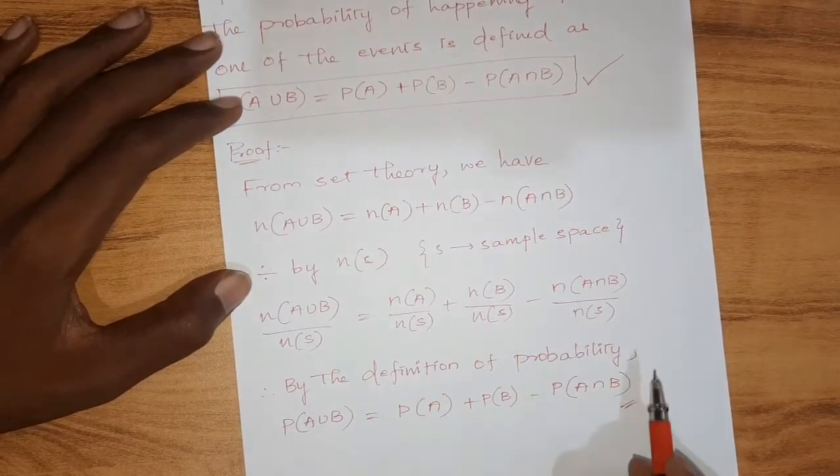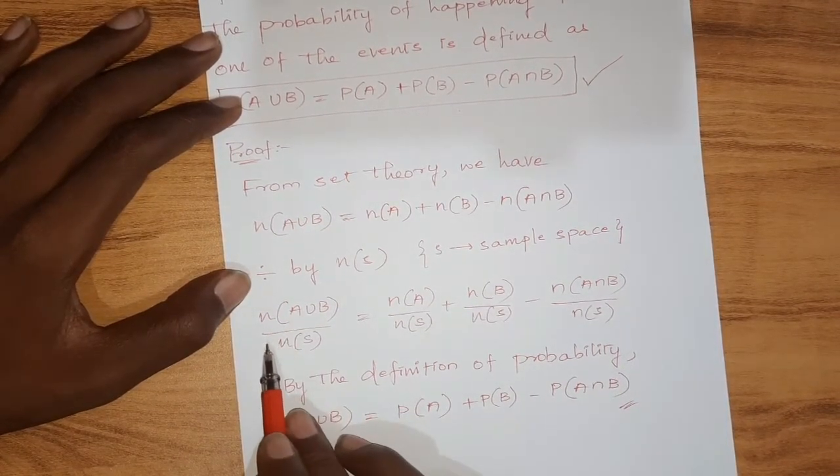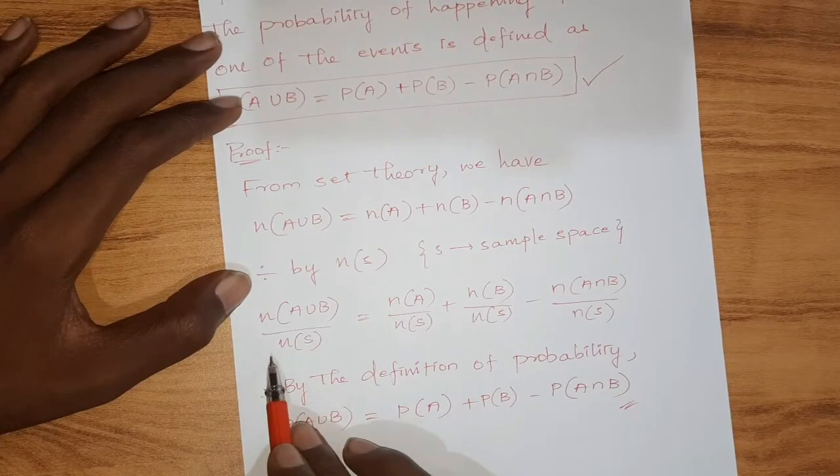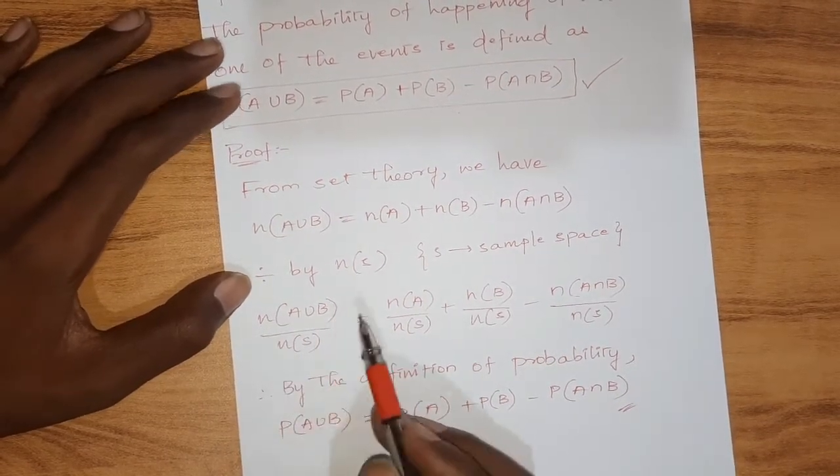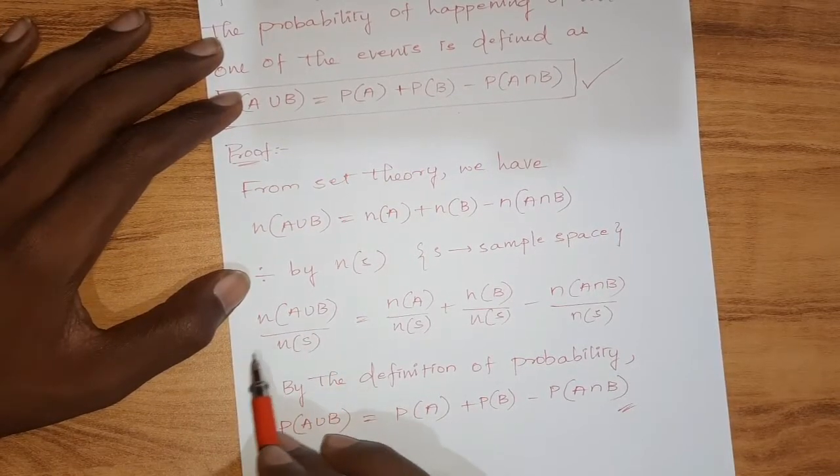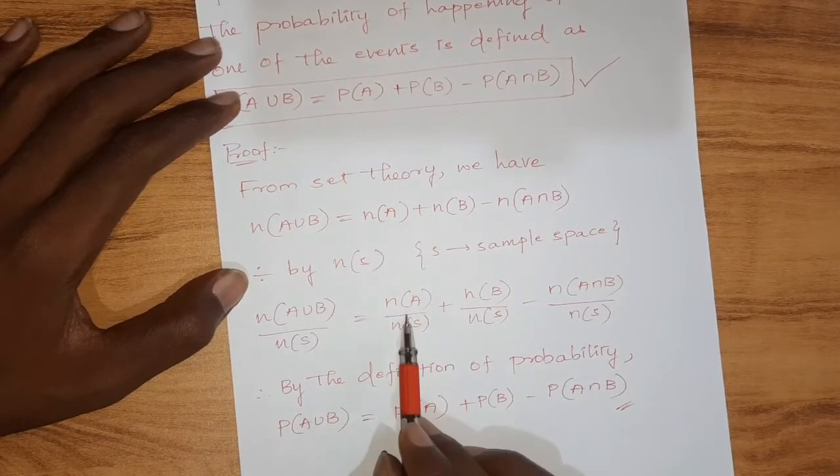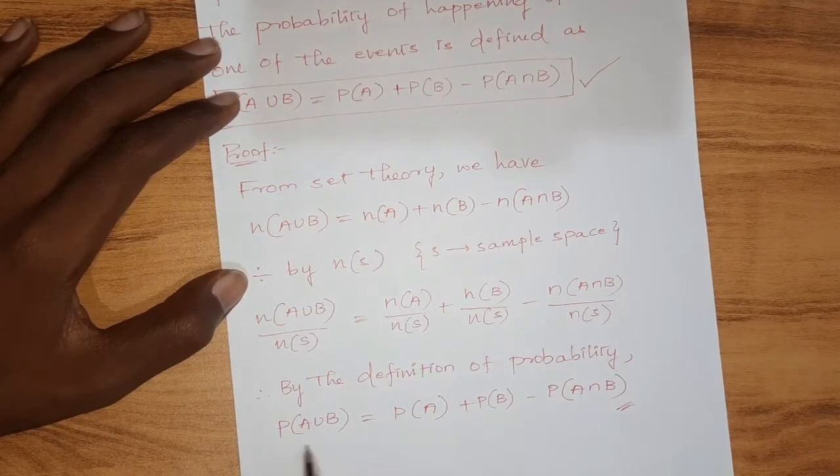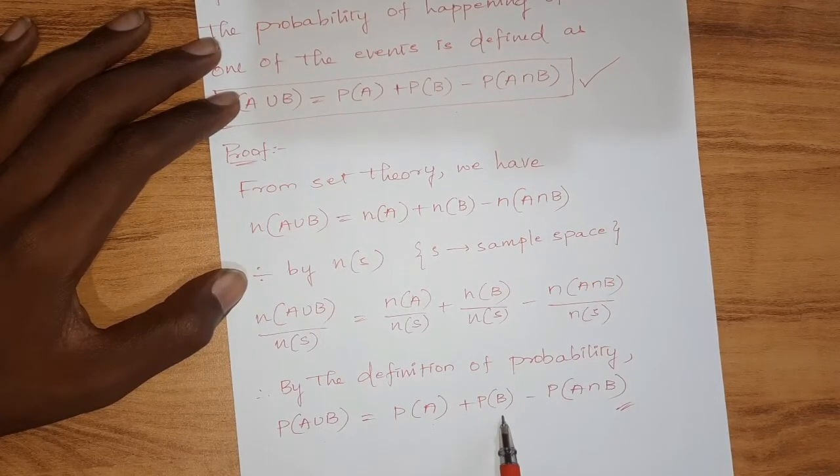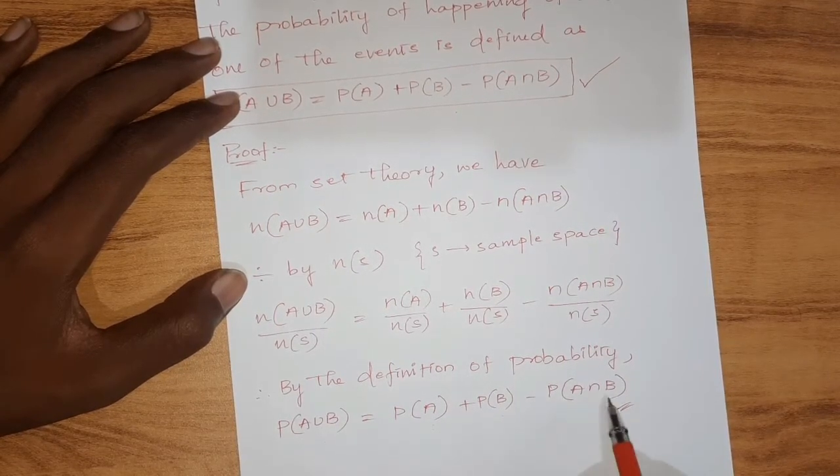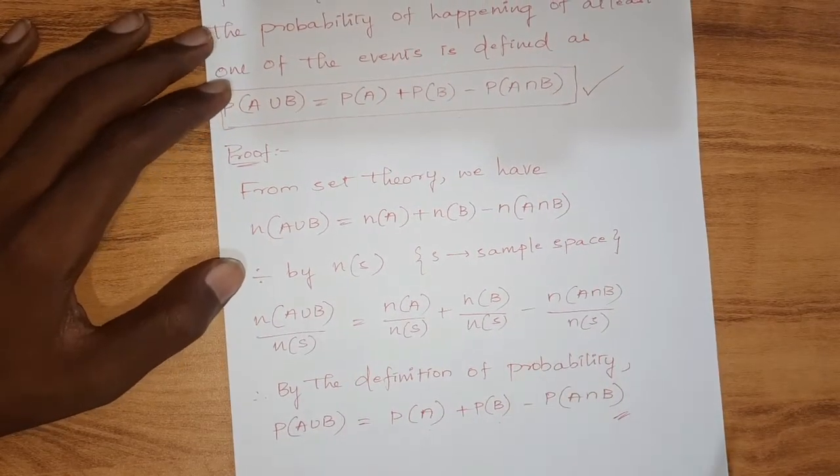By the definition of probability, N of S basically indicates total number of outcomes in a sample space. So N of A union B by N of S equals P of A union B. N of A by N of S is P of A. This is the probability of B, and this is the probability of A intersection B. So this is how we are going to derive the addition theorem on probability.